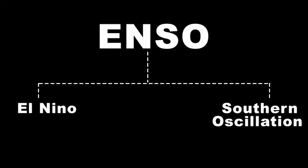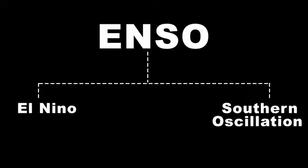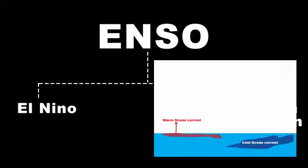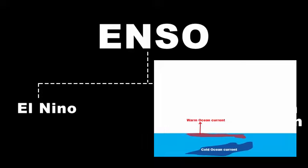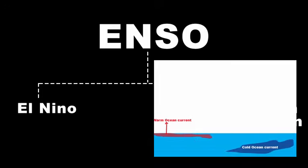When you look at the term oscillation, it gives us a hint that something oscillates from one place to another, or back and forth. It's the temperature that we are talking about — and not just any temperature, ocean temperature. It is the ocean temperature that oscillates back and forth from warm to cold and vice versa.